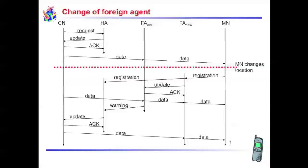When the mobile node changes its location, the MN registers with a new foreign agent. The new foreign agent sends an update request to the old foreign agent, and the old foreign agent sends an acknowledgement to the new foreign agent. Then the correspondent node sends the data to the mobile node. But if the old foreign agent sends a binding warning to the home agent, the home agent sends an update request to the correspondent node, the correspondent node sends an acknowledgement to the home agent, and then the data is sent to the mobile node.